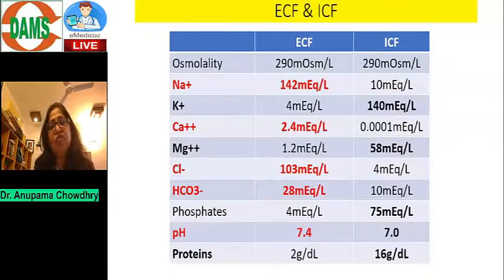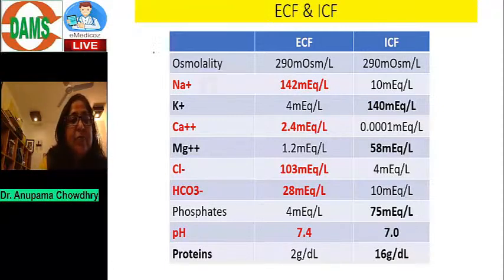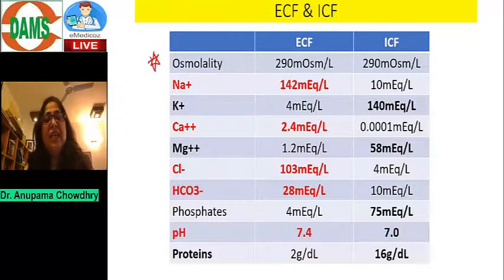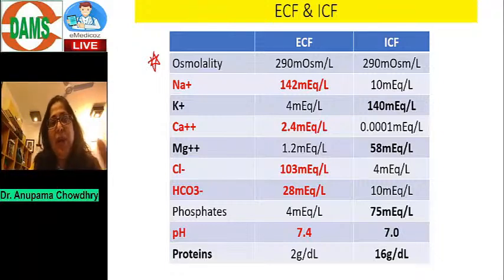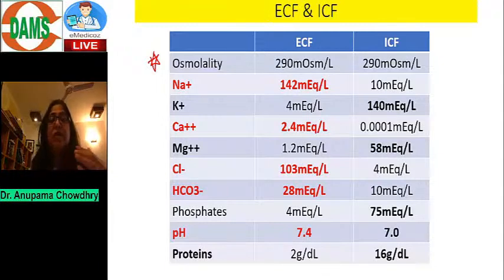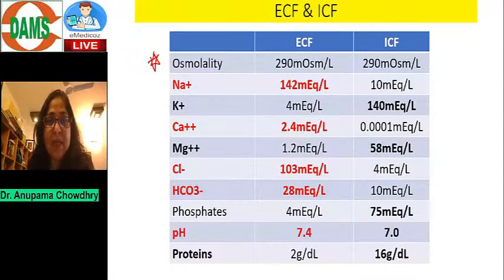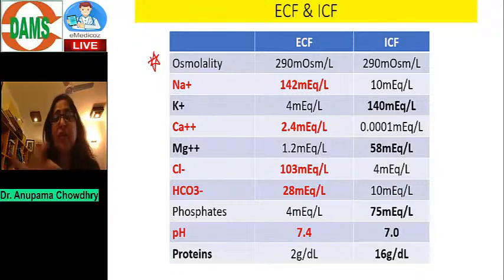Next, what is the difference between ECF and ICF? The first important point is that both have the same osmolality — 280 to 290 milliosmol per litre, with a single value of 290. Because osmolality is the same on both sides, there is no shift of water between the two compartments in normal circumstances.